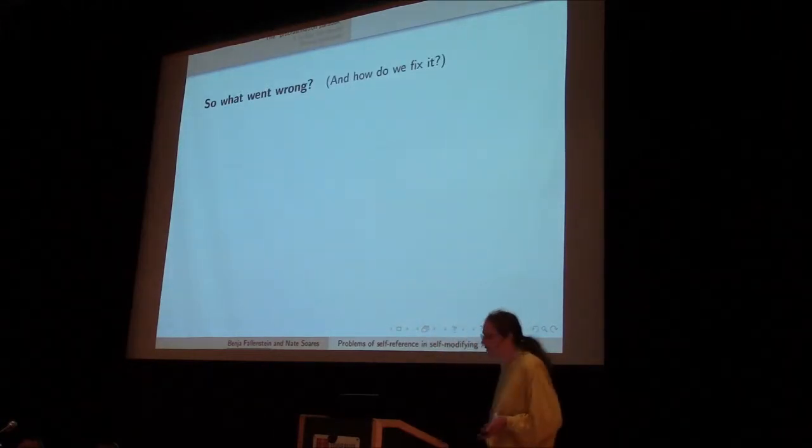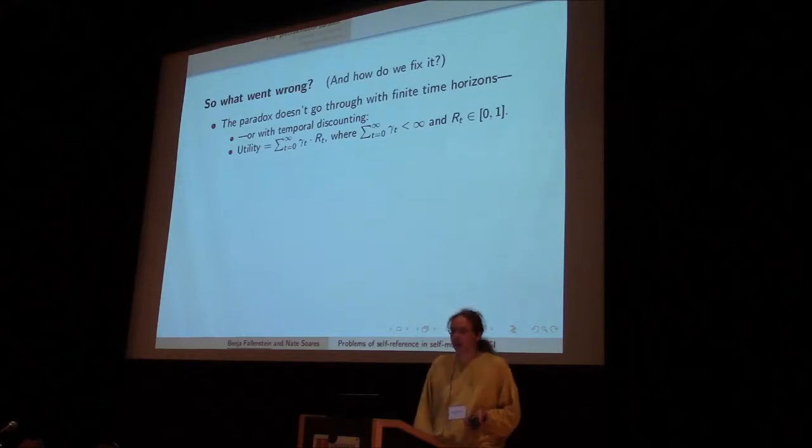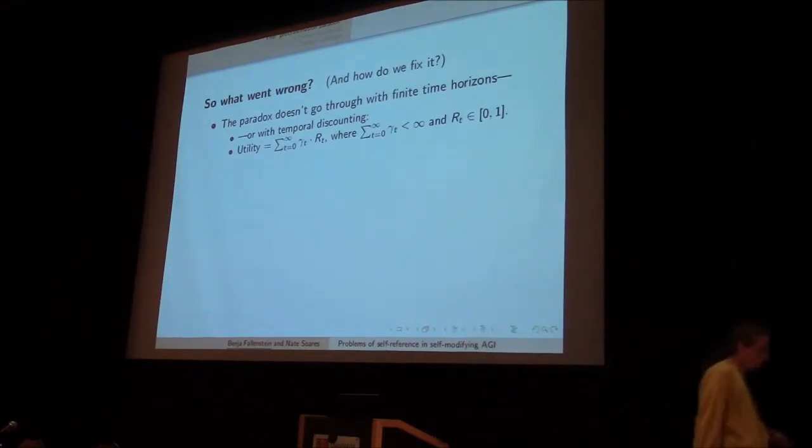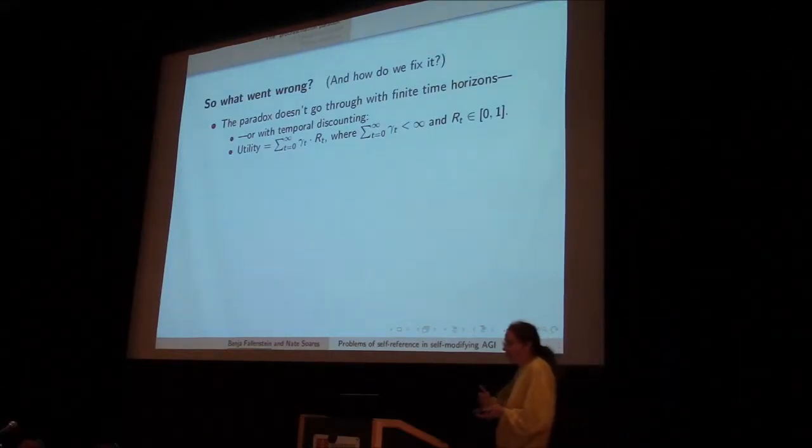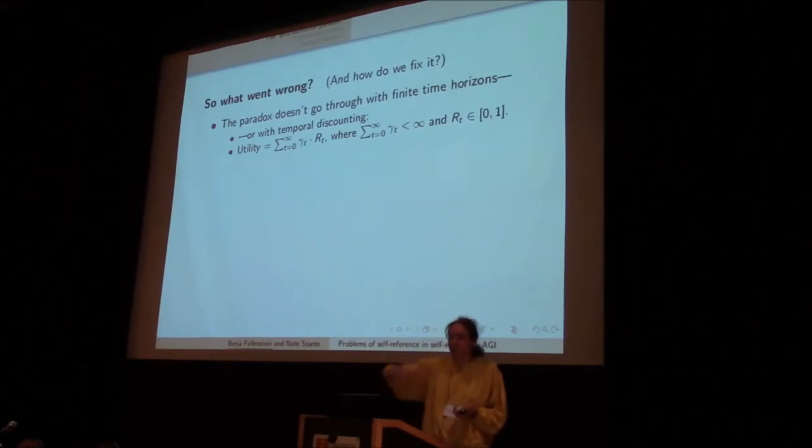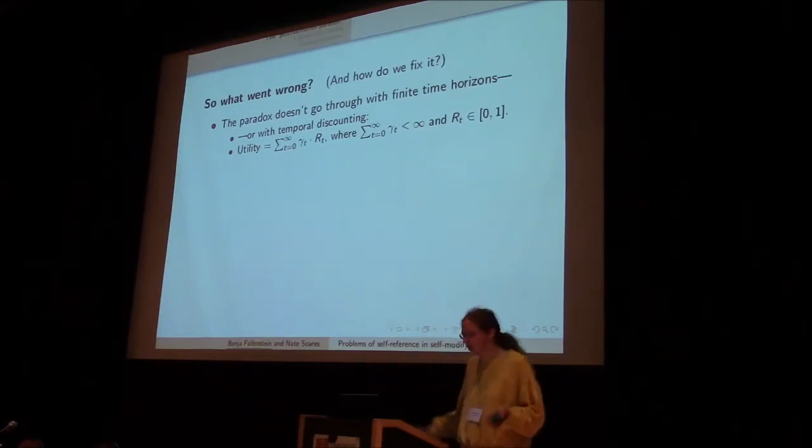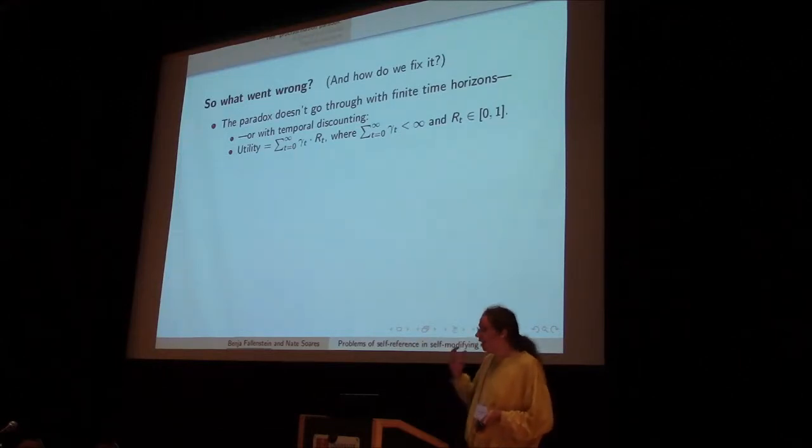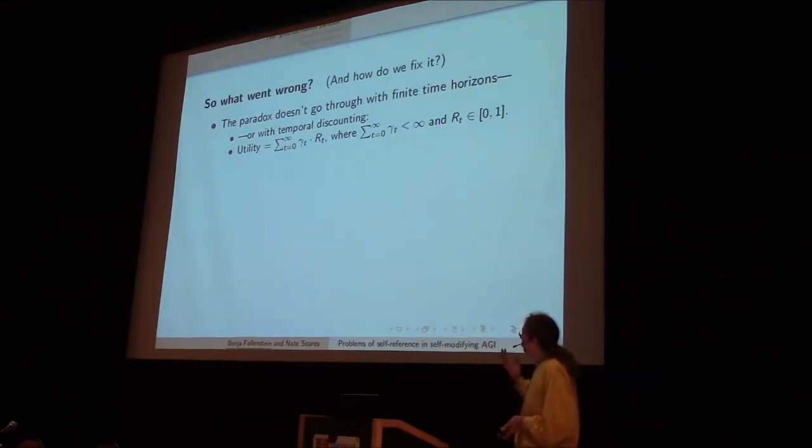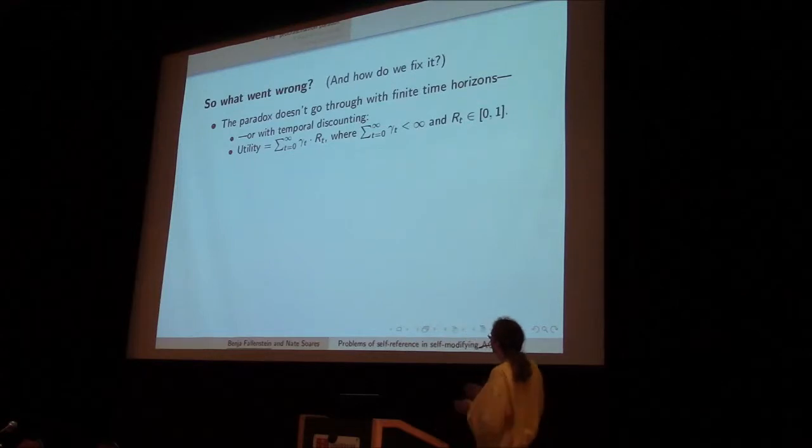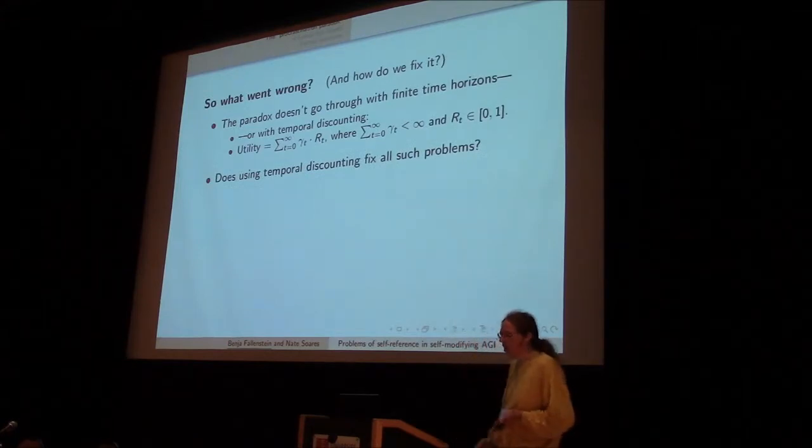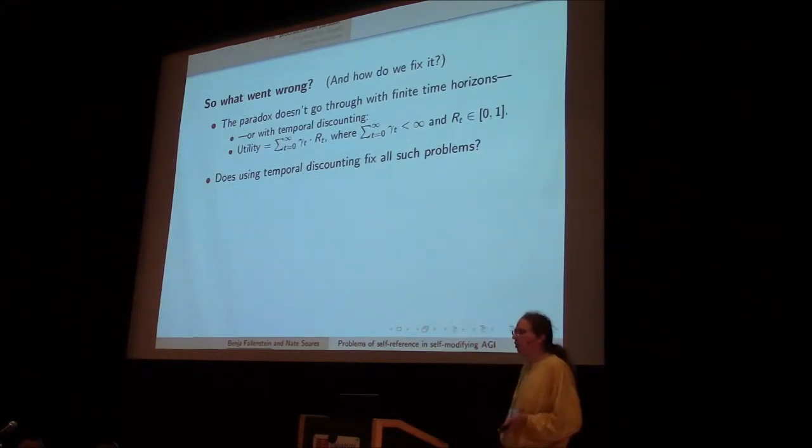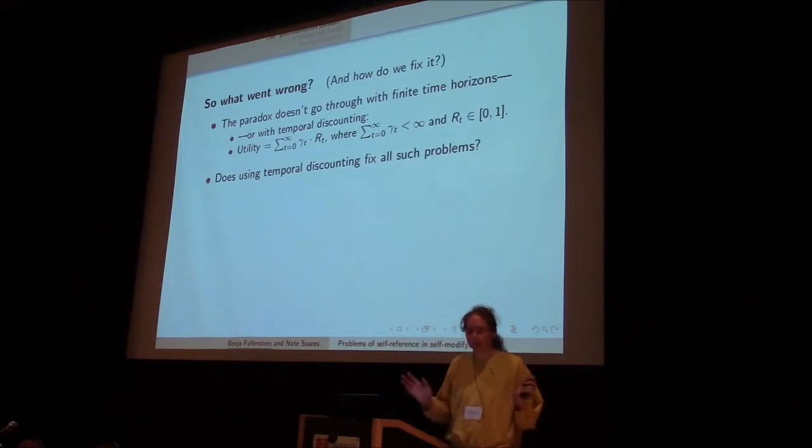So the AGI can always find this good argument that the button will get pressed at some later time, and then it never actually gets around to pressing the button. So if we want to have a reliable way of doing this sort of self-referential reasoning, reasoning about a modification of yourself, you must find a way to avoid this paradox and avoid other problems like this. So let's think about what went wrong and how we can fix it. You may notice that it would go away if we had only a finite time horizon, or if we had temporal discounting. And so the question is, if we just introduce temporal discounting, do we fix all these problems? Can we then use naive reasoning and everything works well?